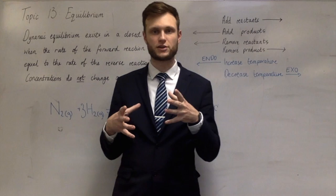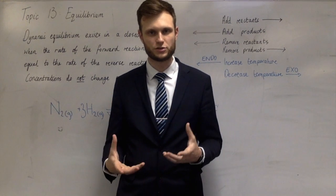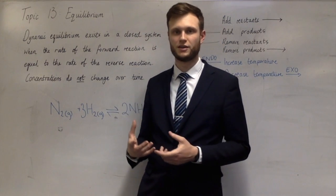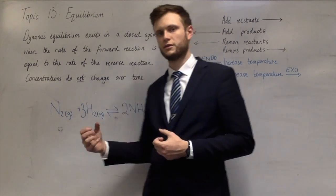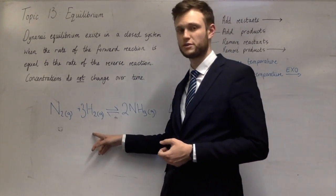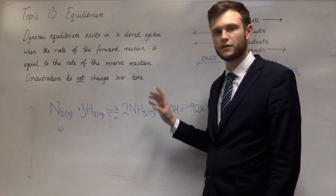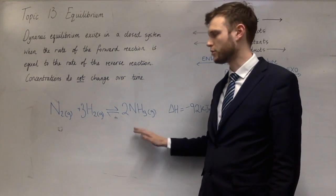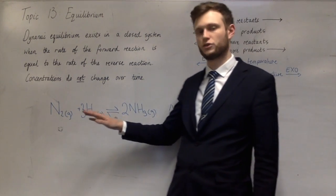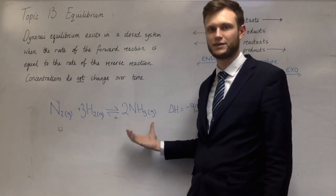If I increase the pressure of the whole reaction mixture by compressing the reaction vessel, the reaction is going to try to decrease the pressure. The way to decrease the pressure of a gas is by removing gaseous molecules. Looking at this reaction, there are four gaseous molecules on the left and two gaseous molecules on the right. So if I increase the pressure, it actually makes more ammonia, because there are fewer molecules on the right-hand side. Increasing the pressure tends to push the equilibrium towards the side with fewer gaseous molecules.